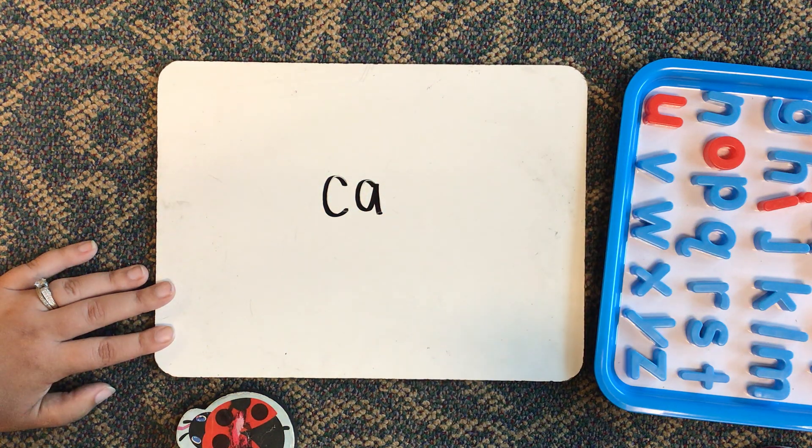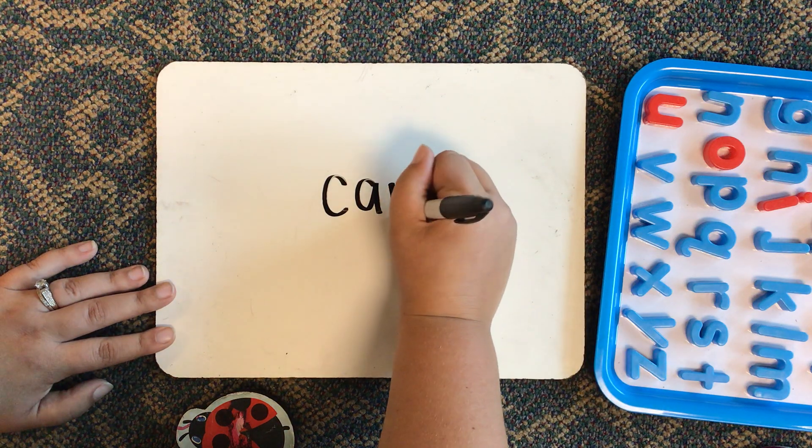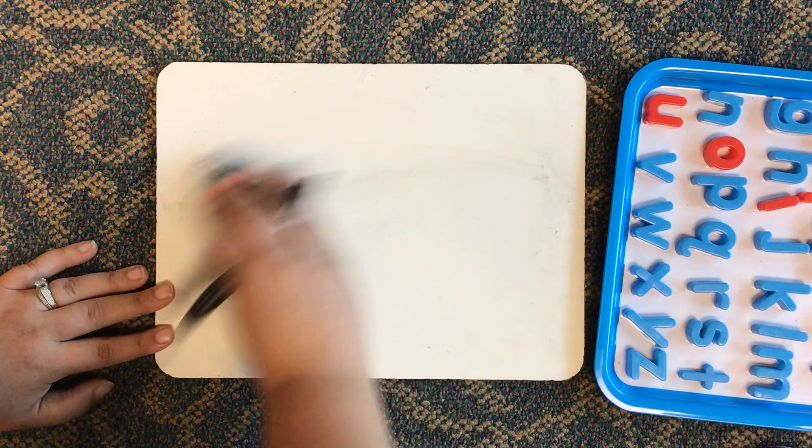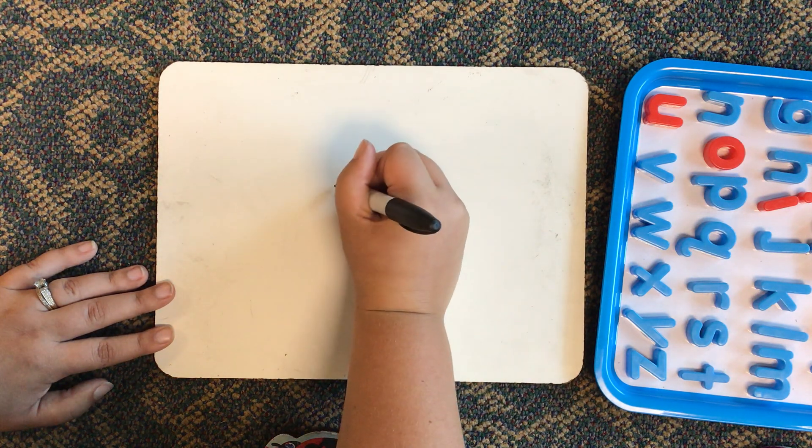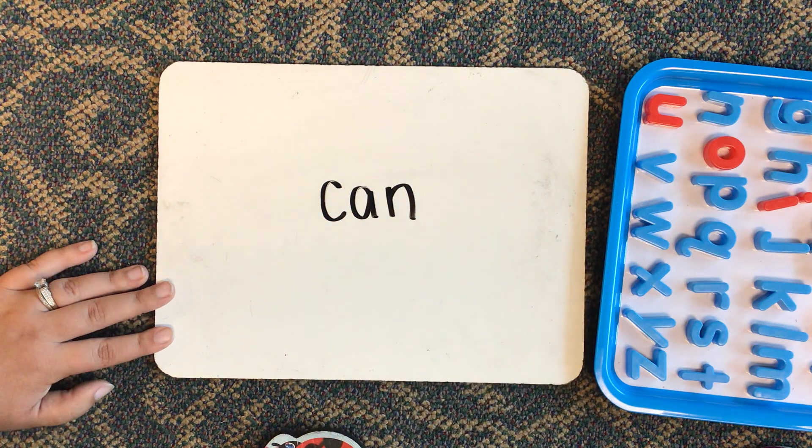Can. What's missing? That's right, the N. Can. And what's missing? Oh, the whole word. Can. There's the sight word can.